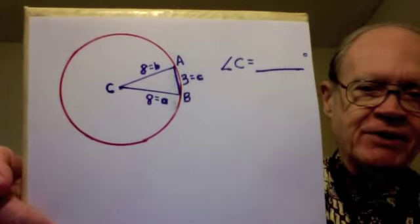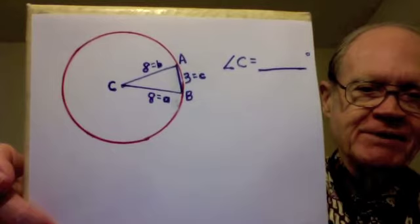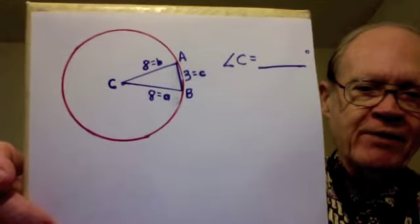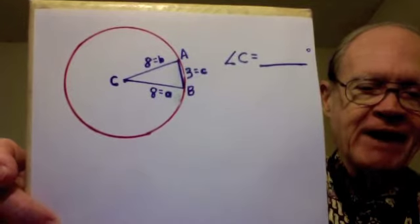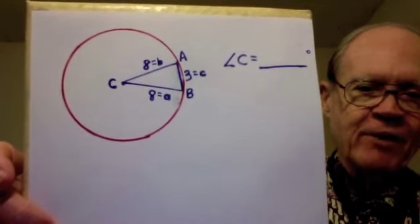A trig equation that works perfectly in this problem is known as the law of cosines. You can use it when all three side lengths of a triangle are given, and you want to find one or more of the angles.